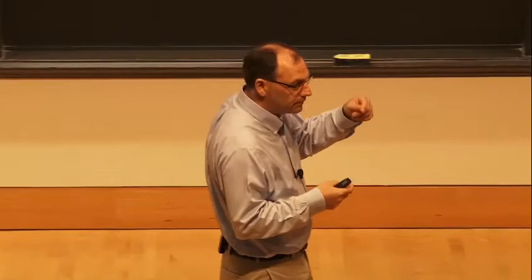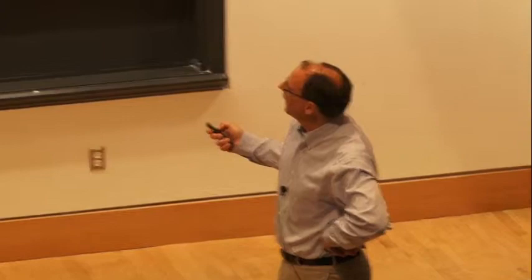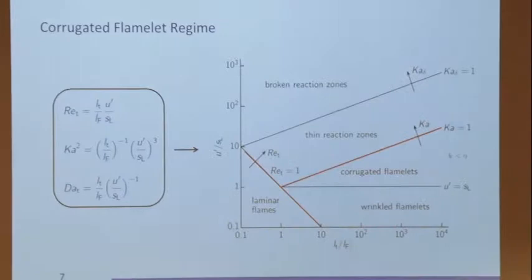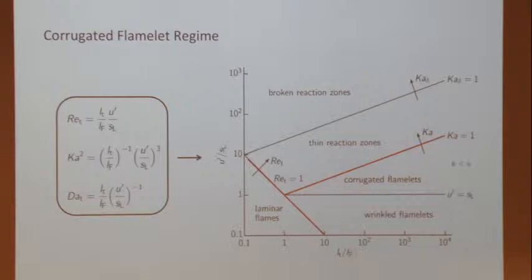Scaling means: if I'm sitting in the turbulent region and make L_T/L_F 10 times smaller and U prime/S_L 10 times larger, it should still be turbulent. Then we look at Karlovitz equal to 1, which tells us whether the flame thickness or the Kolmogorov length is larger. Setting Ka=1, U prime/S_L equals (L_T/L_F)^(1/3) — a line with a slope of one-third on the log-log plot.